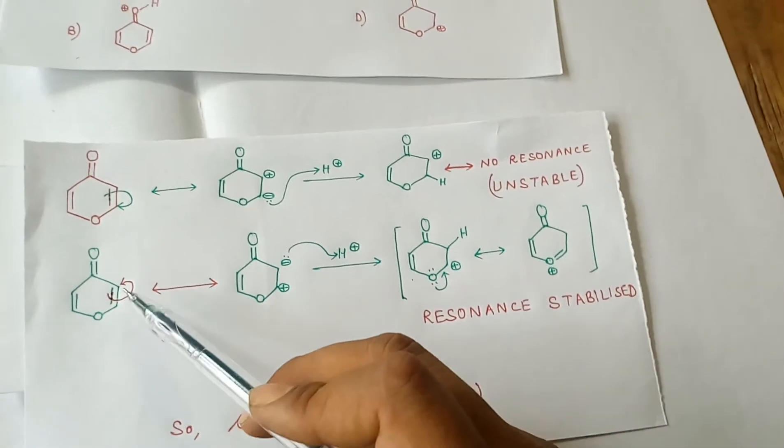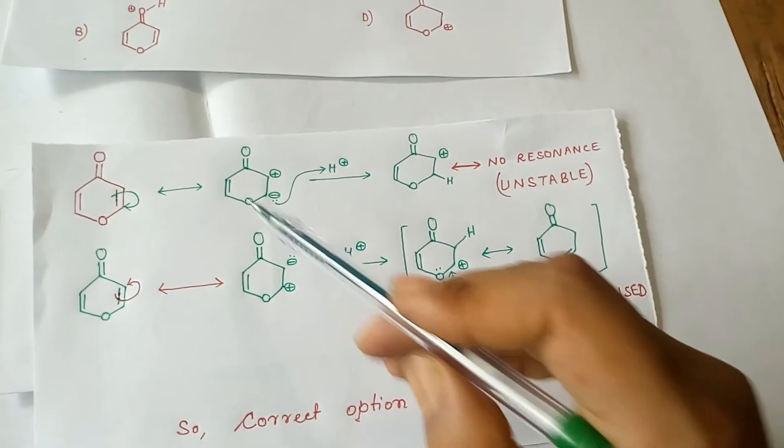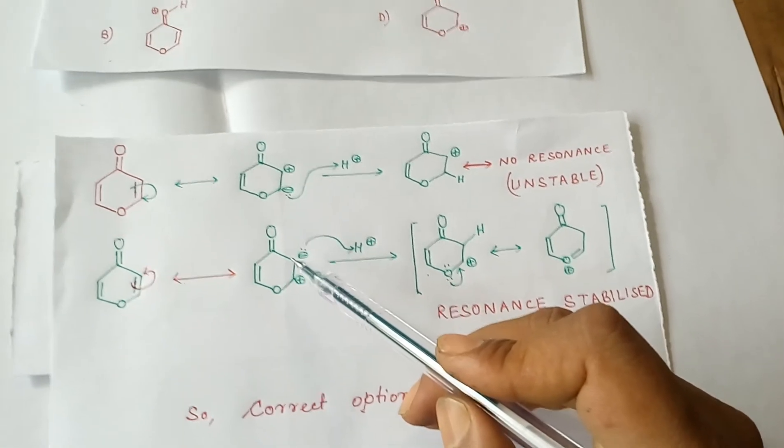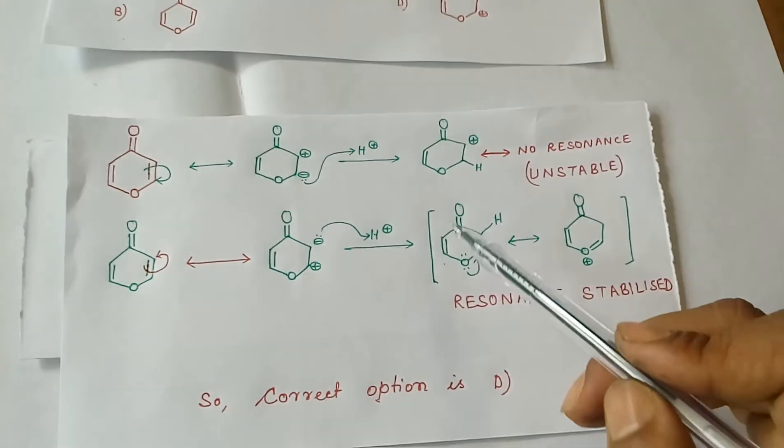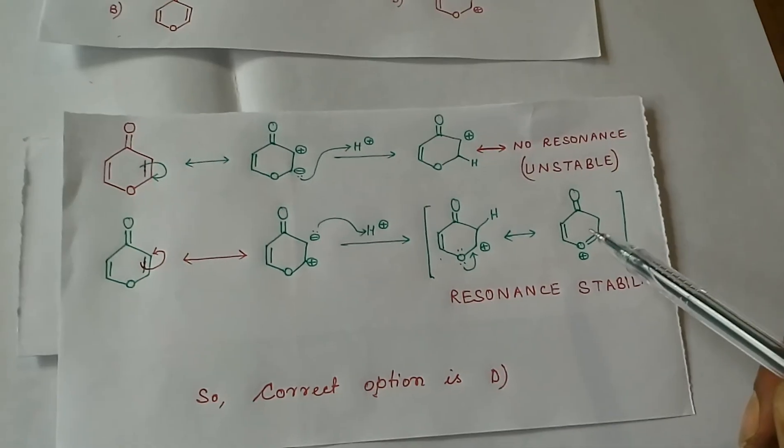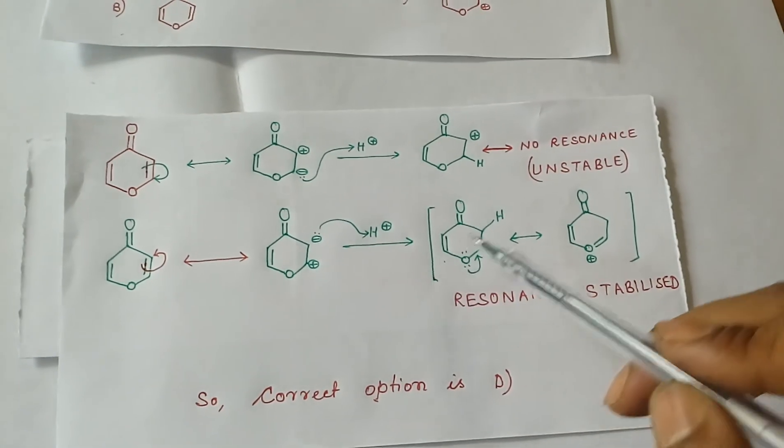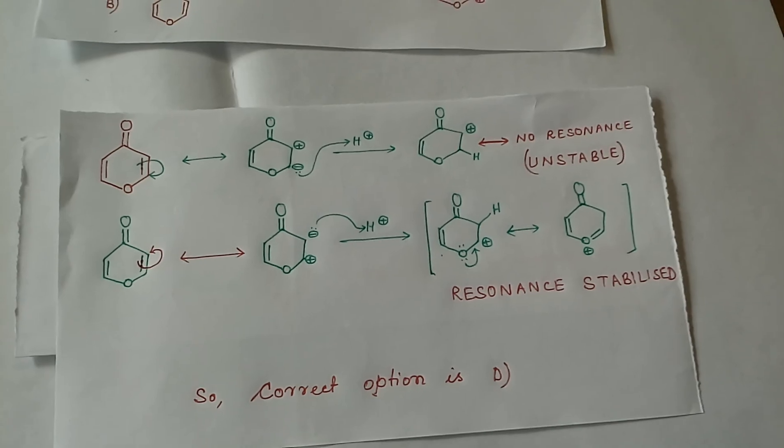Another possibility is that the electromeric effect takes place on the other side, making this carbon positively charged and this carbon negatively charged. This negative charge attacks a proton, giving us this intermediate, which is resonance stabilized. So this is the only intermediate which is resonance stabilized. Answer D, option D is the correct answer. Thank you.